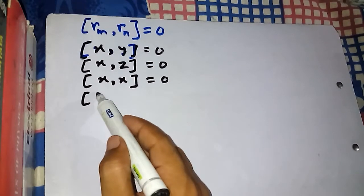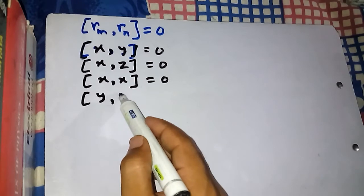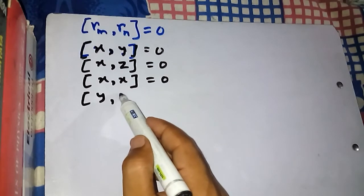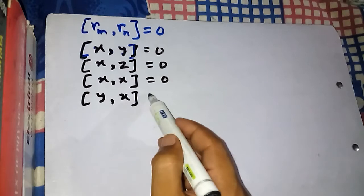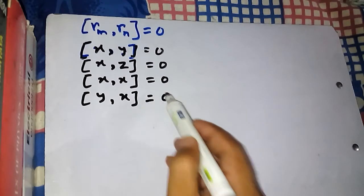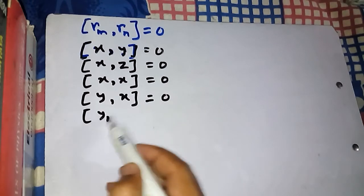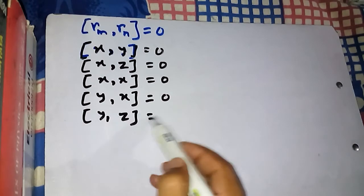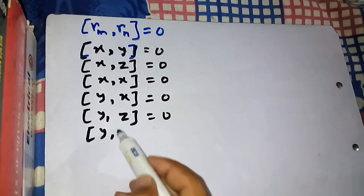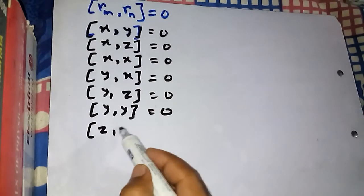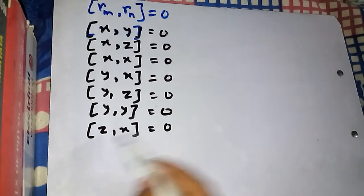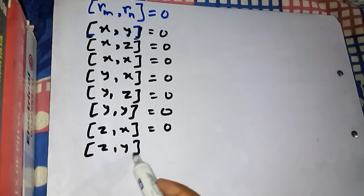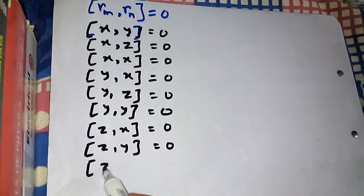Similarly, [y, x] is zero, [y, z] is zero, and [y, y] is also zero. Likewise, [z, x] is zero, [z, y] is zero, and [z, z] is zero.